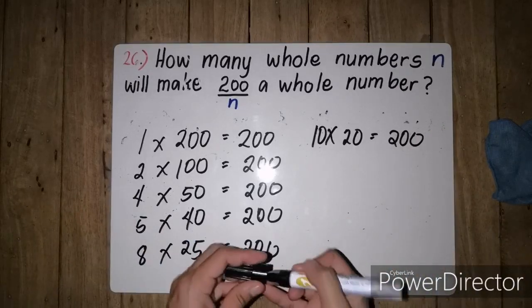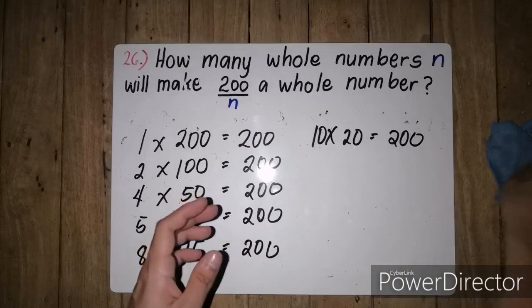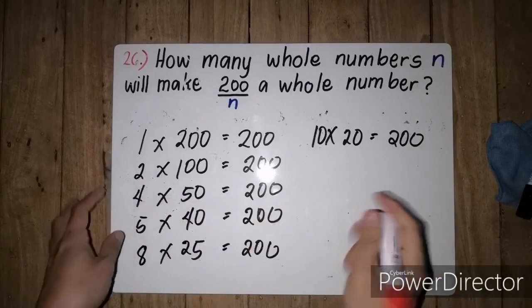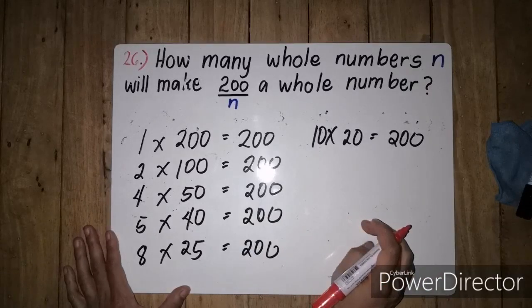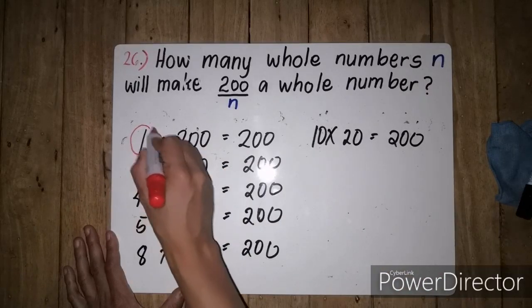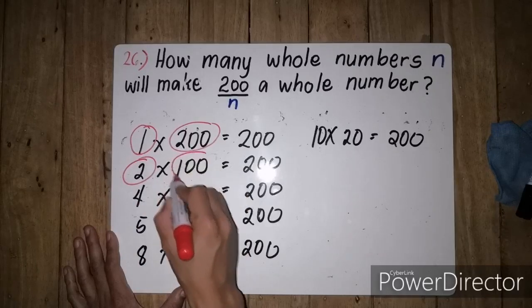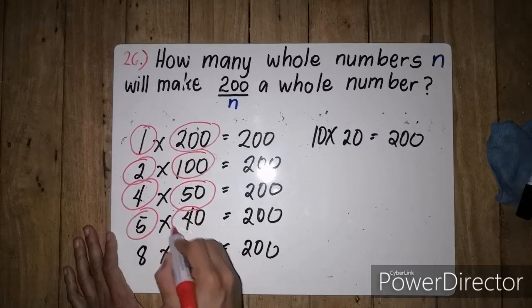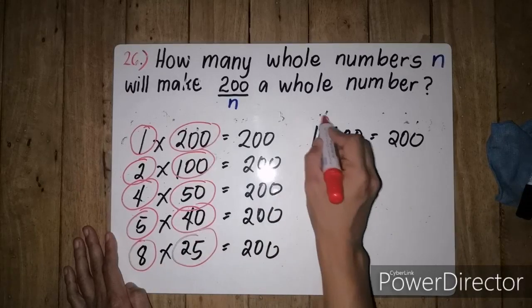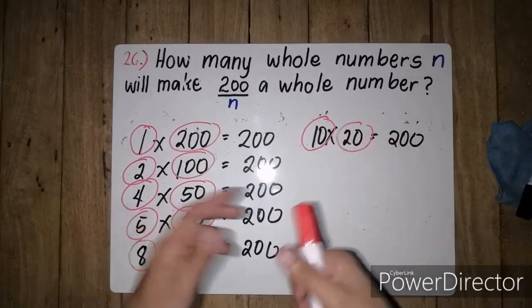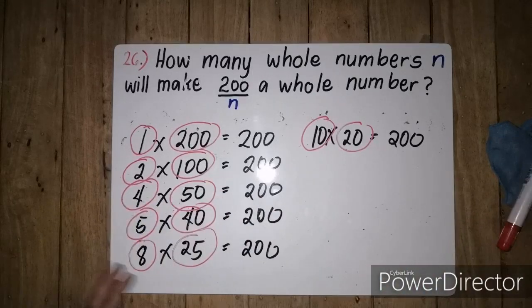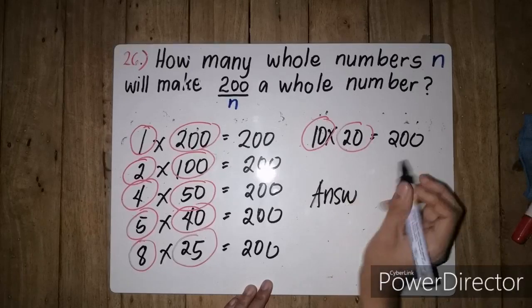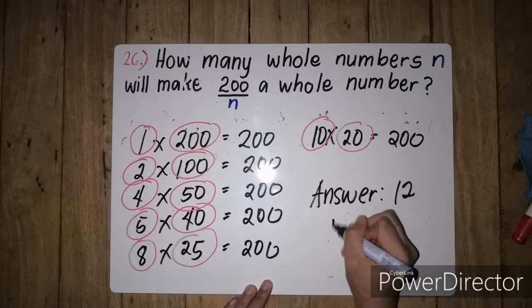Since the question is asking how many whole numbers, bibilangin natin ngayon yung mga whole numbers na pinag-multiply natin para magkaroon tayo ng 200. So we have 1, 2, 3, 4, 5, 6, 7, 8, 9, 10, 11, 12. So our answer for this problem is 12 whole numbers.